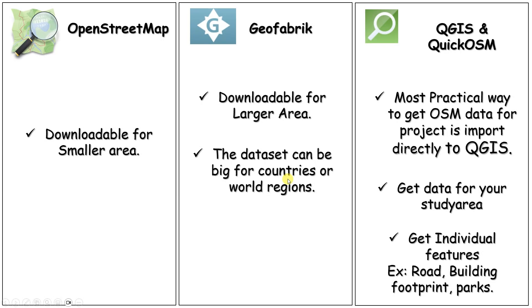Now if we compare OpenStreetMap, Geofabric, and the QuickOSM plugin: for OpenStreetMap, if your study area is very small you can download directly from the OpenStreetMap website. Otherwise, if you are dealing with a larger area, you can use Geofabric — it is suitable for larger areas. The data sizes can be big because it holds data country-wise, and within a country you can also download based on regions.